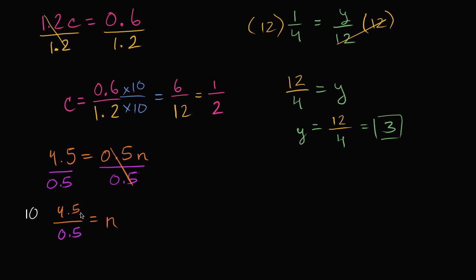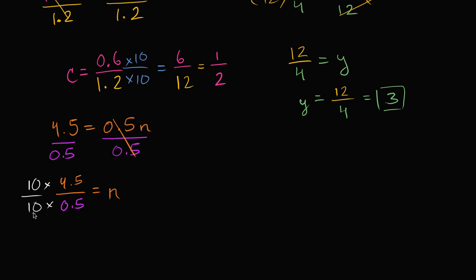So once again, it has to be multiplying the numerator and the denominator by the same thing. We're multiplying by 10 over 10, which is equivalent to 1, which tells us that we're not changing the value of this fraction. So let's see. This is going to be 45 over 5. Over 5 is equal to n.